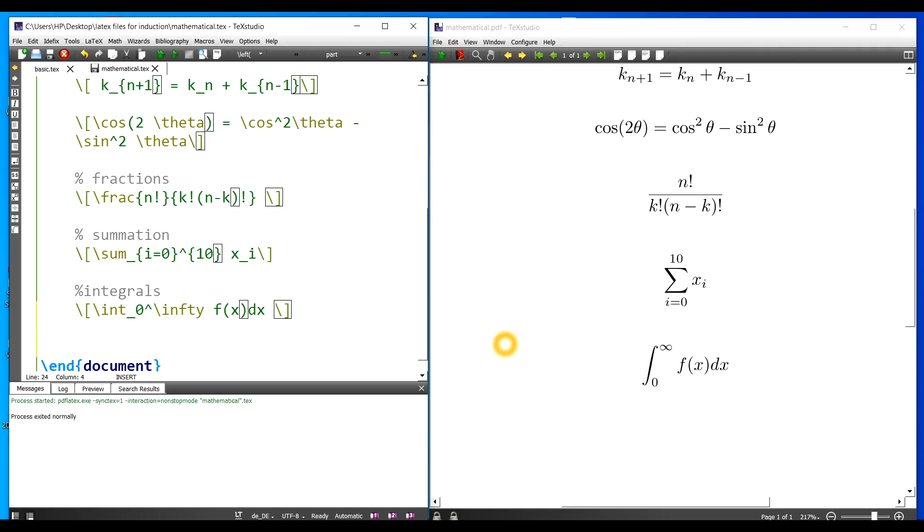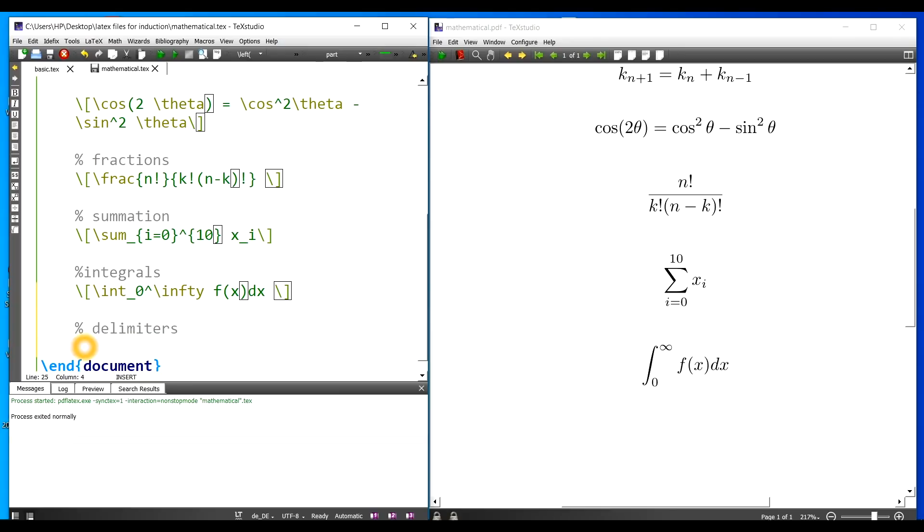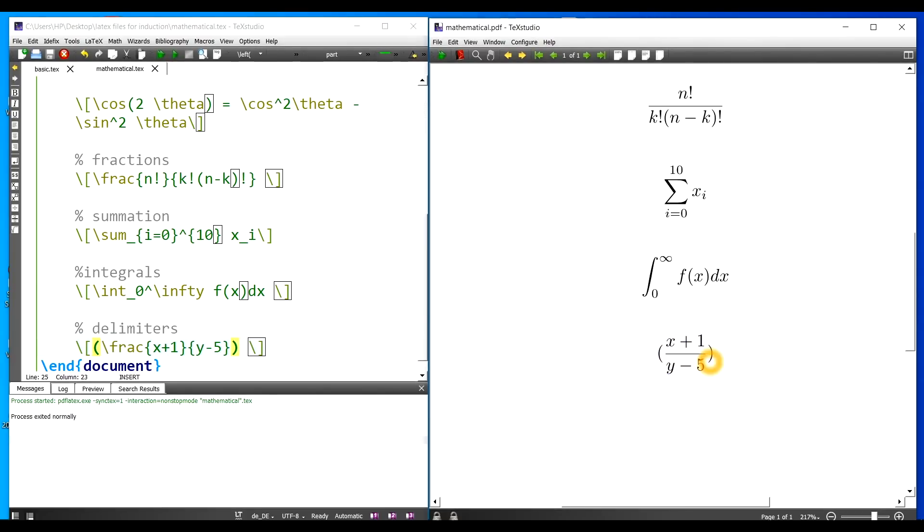Now often in mathematics there are features which are of different size. In that case we need delimiters to be resized according to the need. For that we have slash left and slash right. Let me show you that now. For the delimiters, suppose I have a fraction. Let me start the mathematical mode and I have a fraction say slash frac. My numerator is x plus 1, and my denominator is y minus 5. And I want to write this fraction in brackets. Now if I execute, the brackets are not somehow looking nice. It's not taking the whole expression inside it.